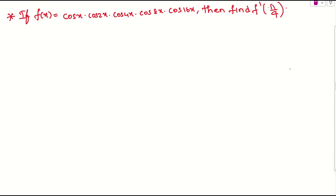Let us see what was the question given here. They are asking about f of x equals cos x times cos 2x times cos 4x times cos 8x times cos 16x. Then we need to find f dash of pi by 4.